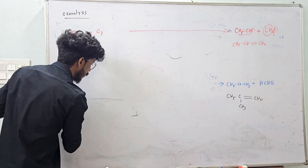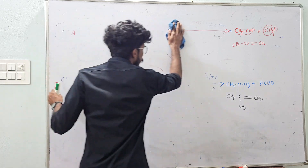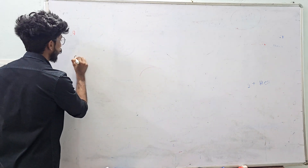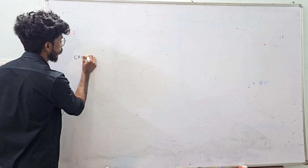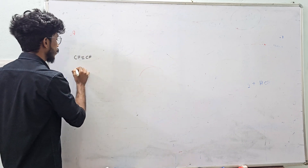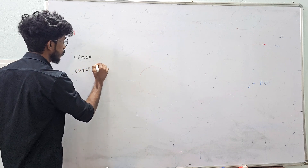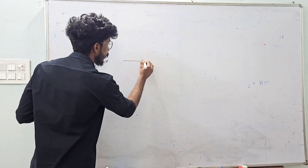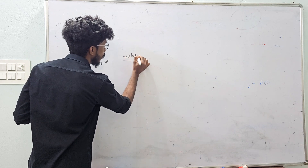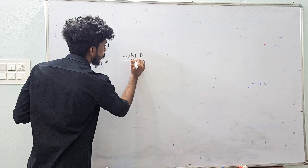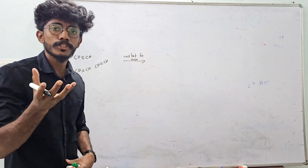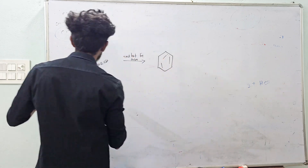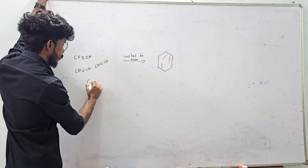Next, we have a preparation of benzene — one important preparation of benzene. We have an ethyne molecule, CH double bond CH. Here we have 3 ethyne molecules, CH double bond CH. If we have 3 ethyne molecules, we have a red-hot iron tube.